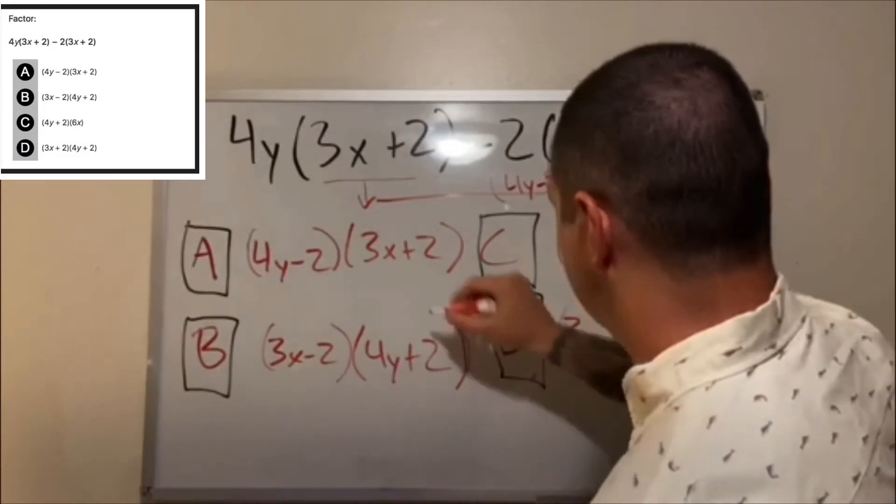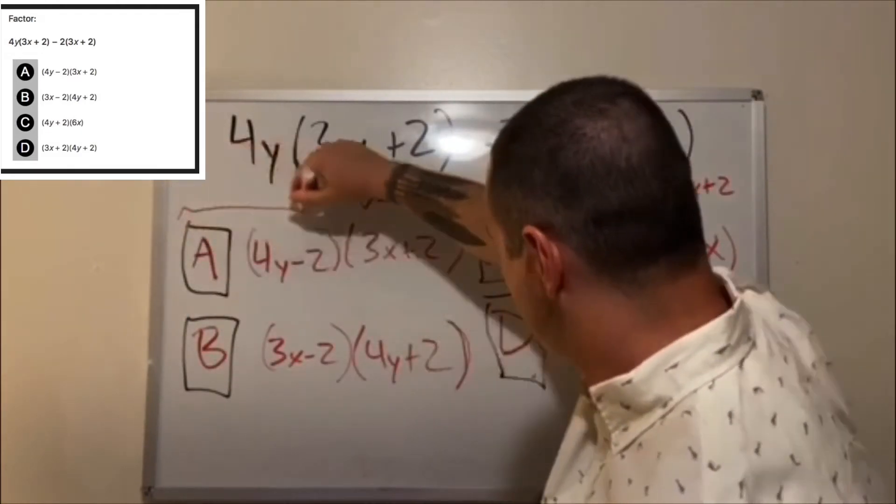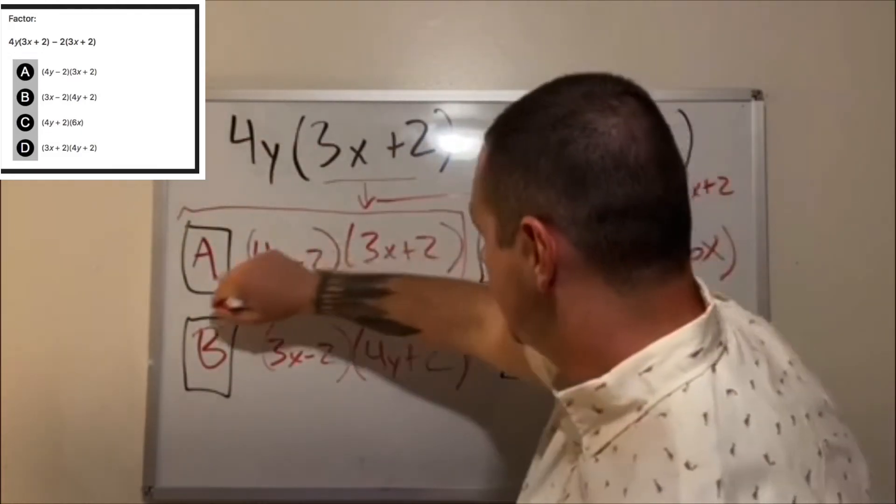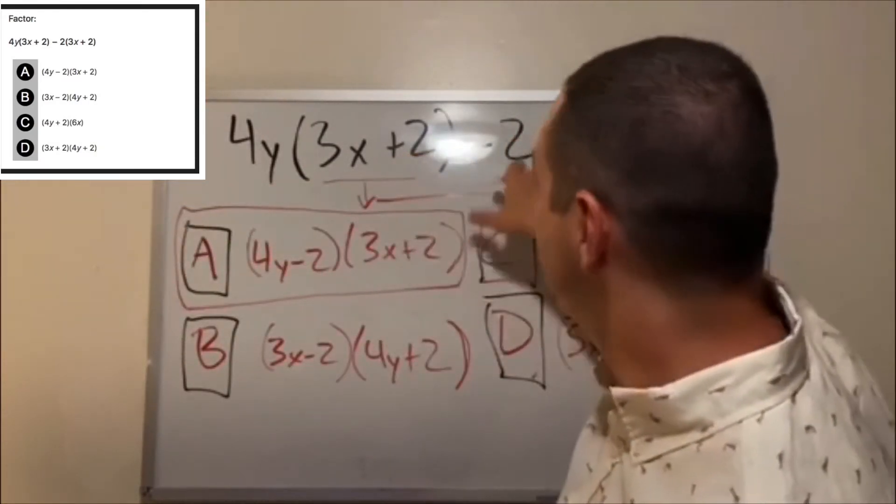And you multiply that by 3x+2. So you can see that answer is clearly A. A has to be your answer because that has the 4y-2 and the 3x+2 - you pull that out of each term.